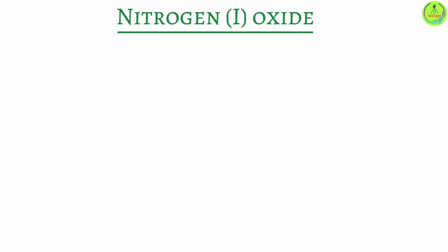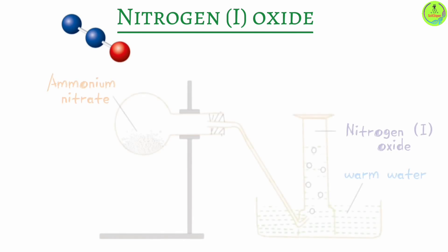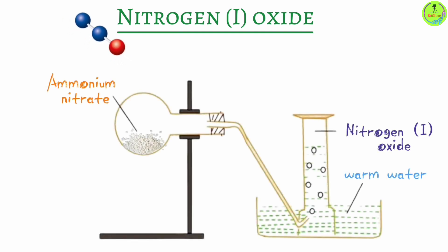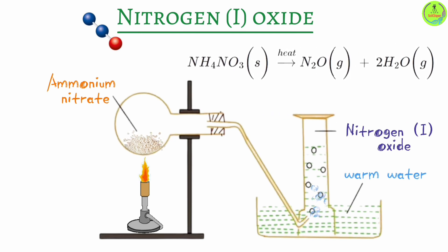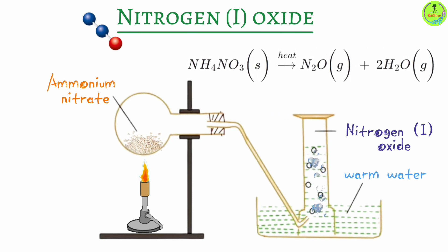To prepare nitrogen one oxide, it is a simple process. All you need is ammonium nitrate and a source of heat. Ammonium nitrate decomposes on heating to form nitrogen one oxide and steam, as shown by the chemical equation.